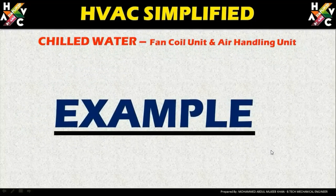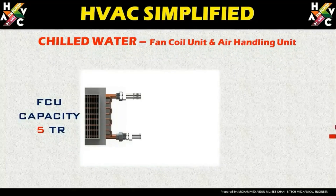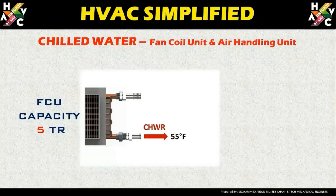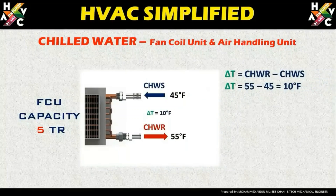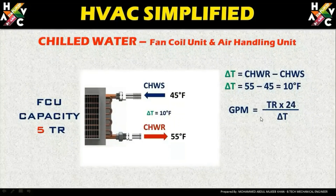Now let us understand with an example how to calculate and derive the GPM for a particular unit. Here we have taken an example of a fan coil unit with a capacity of 5 tons. For this 5-ton fan coil unit, we need to derive the required GPM. The chilled water return temperature is 55°F and the chilled water supply temperature is 45°F, giving a delta T of 10 degrees Fahrenheit.